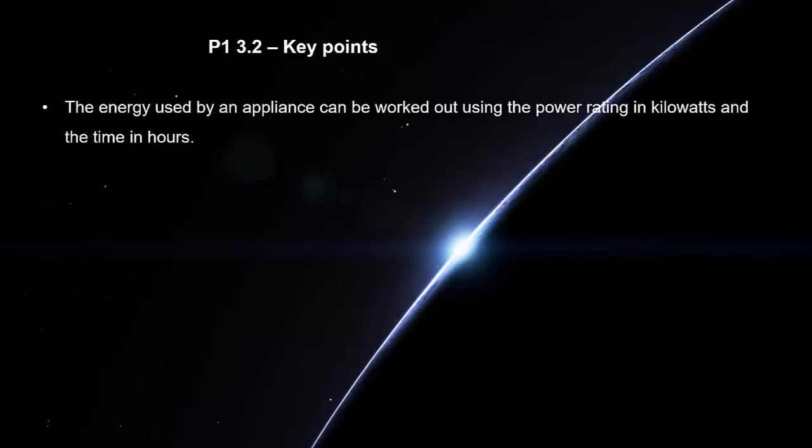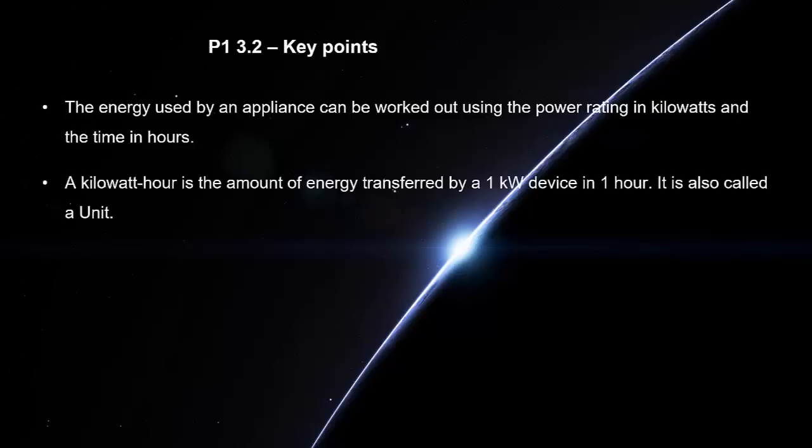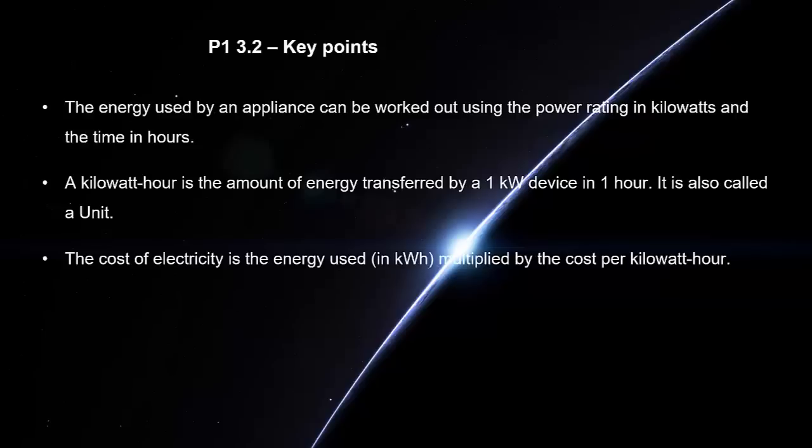The energy used by an appliance can be worked out using the power rating in kilowatts and the time in hours. A kilowatt-hour is the amount of energy transferred by a one kilowatt device in one hour. It is also called a unit. The cost of electricity is the energy used in kilowatt-hours multiplied by the cost per kilowatt-hour.